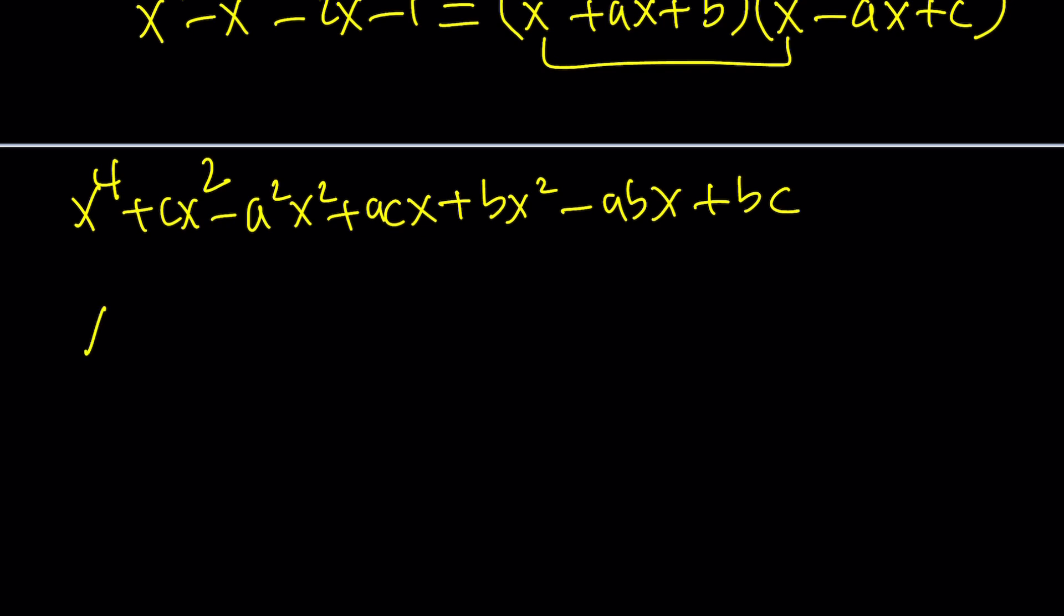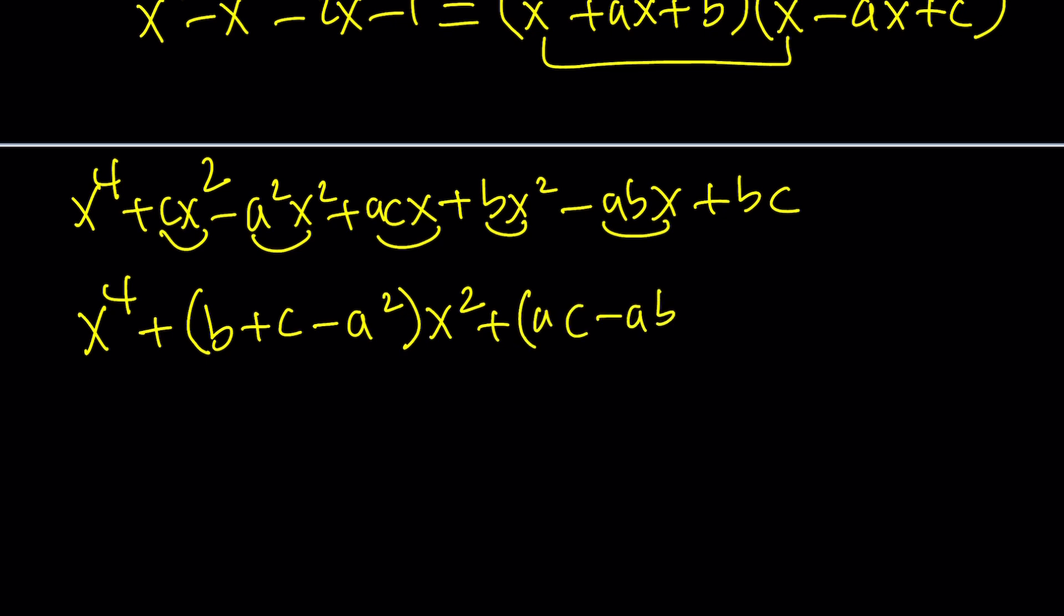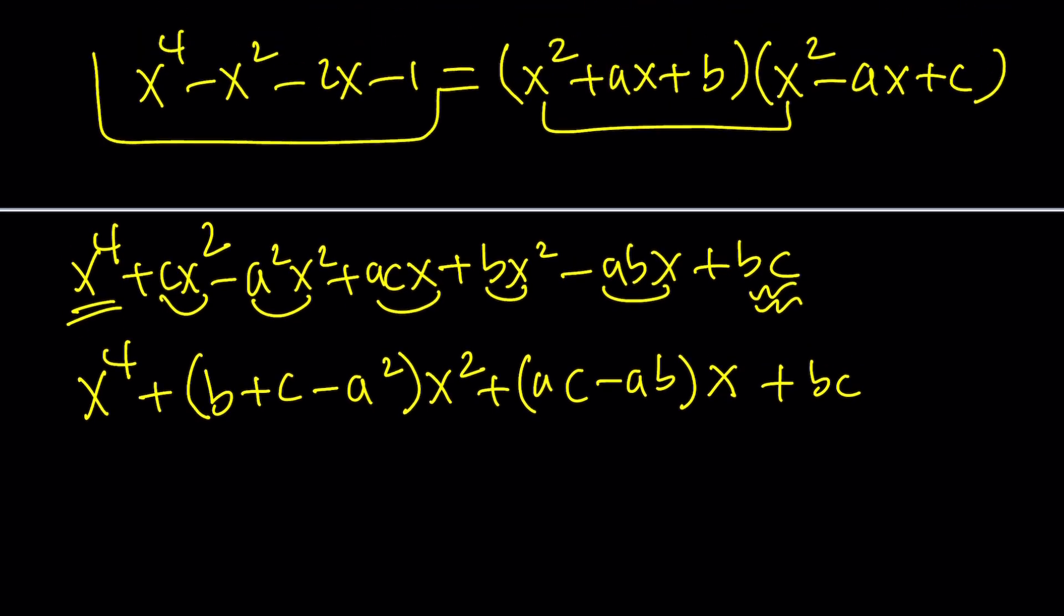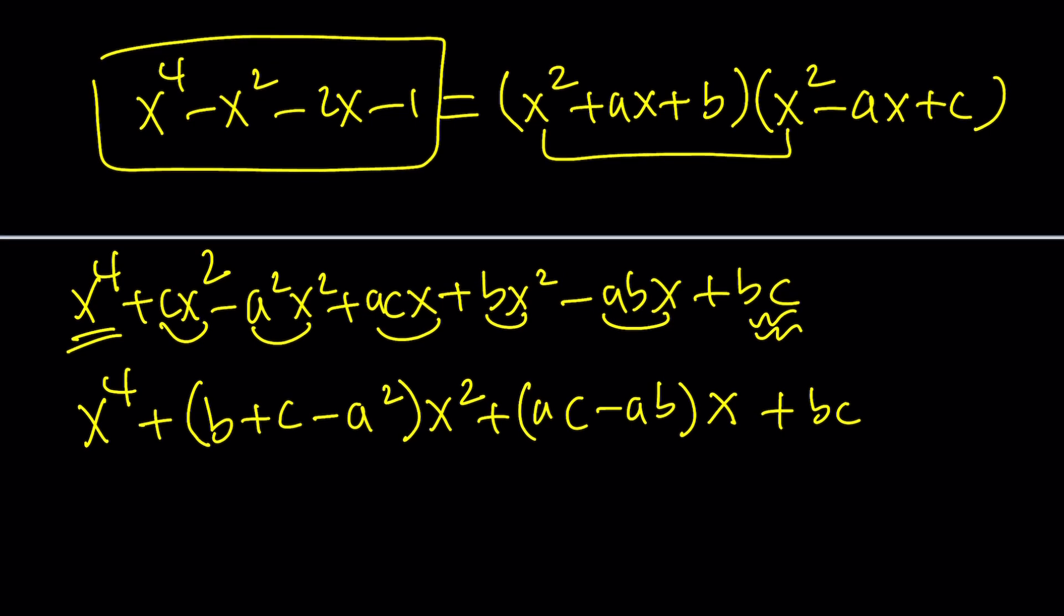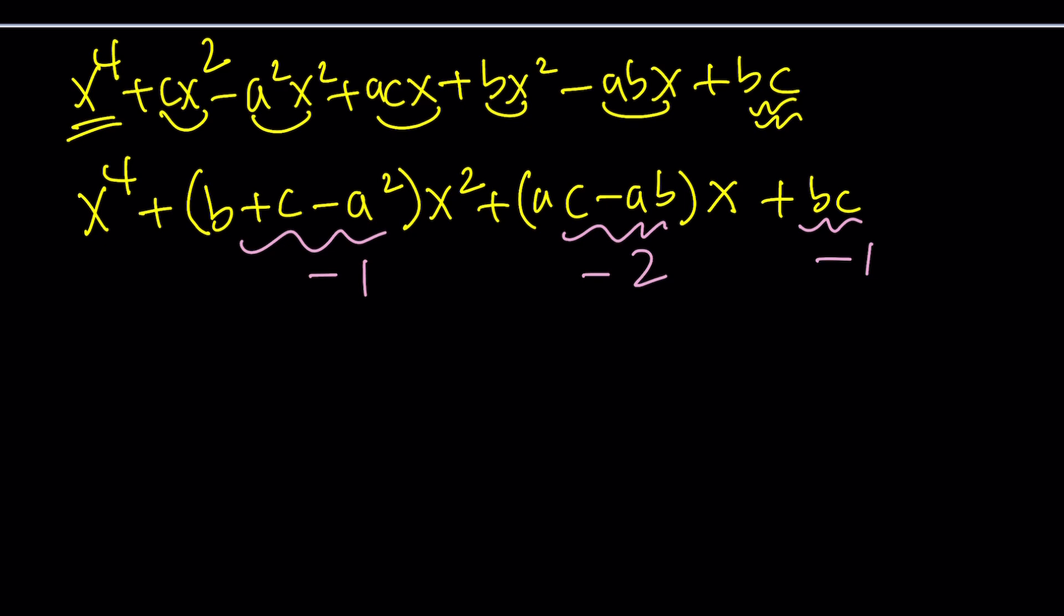Let's first put the x squared terms together. I would try to make it in alphabetical order, but I want to write the b and c first because a squared has a minus sign like this. And then we have the ac minus abx. This is kind of like a general way to factor it. Underlining helps because you know which terms you already used.